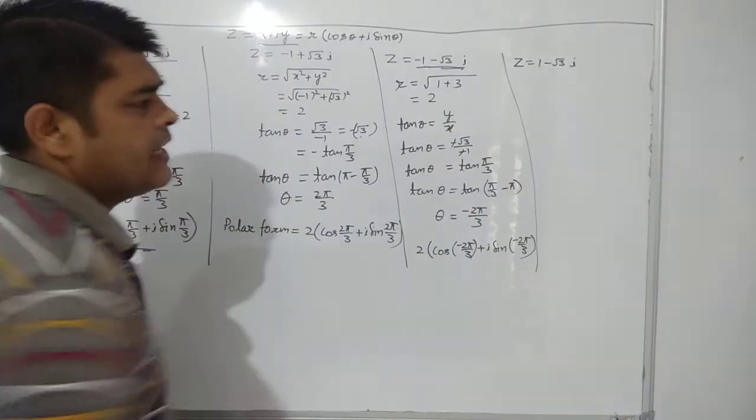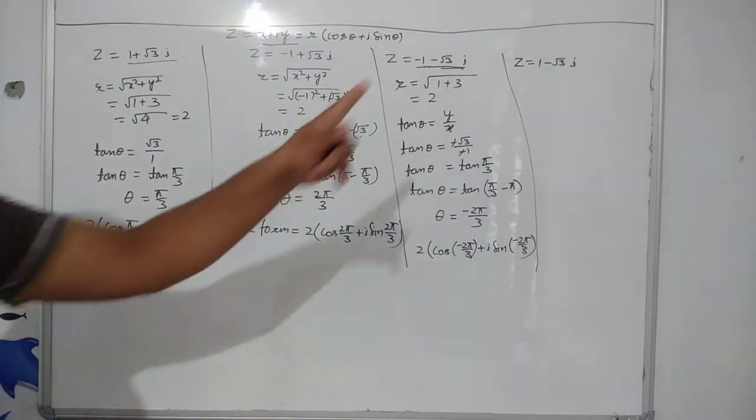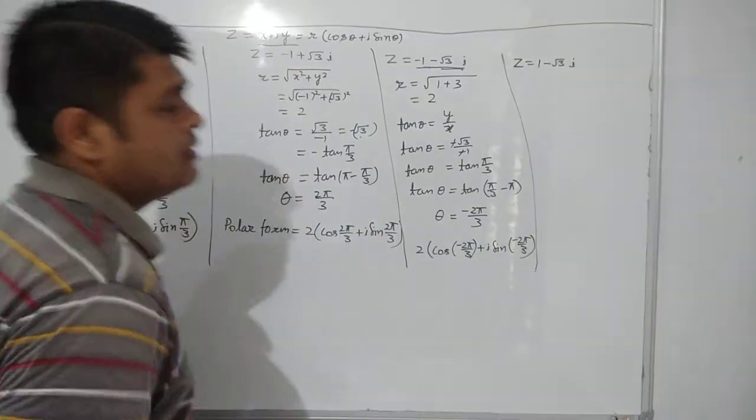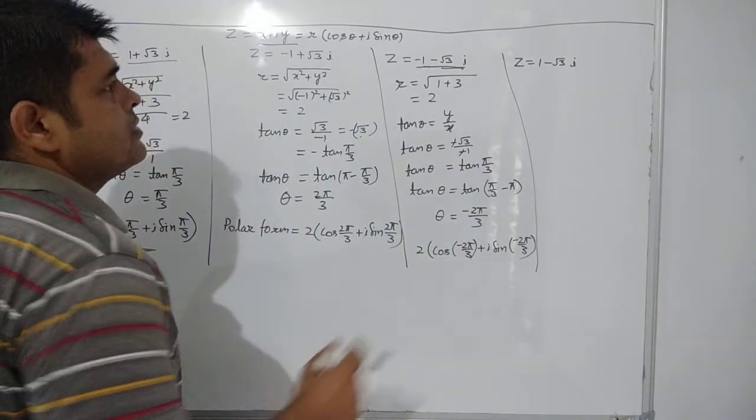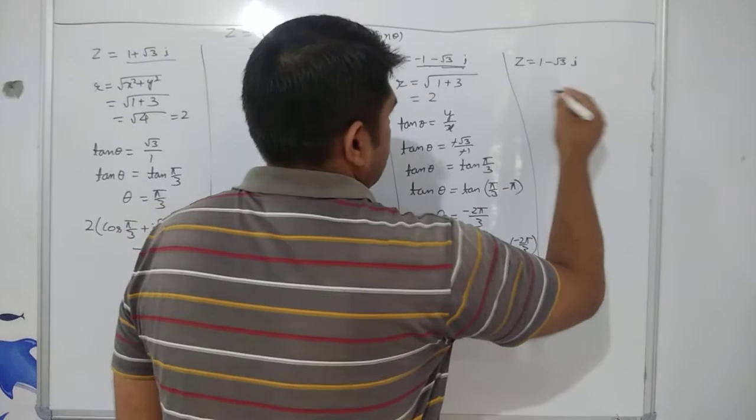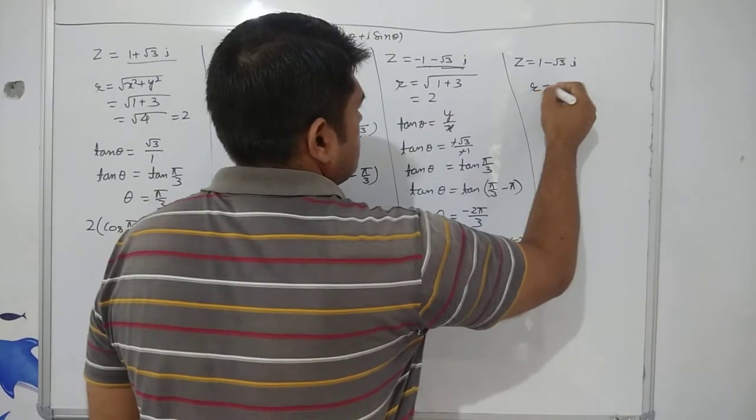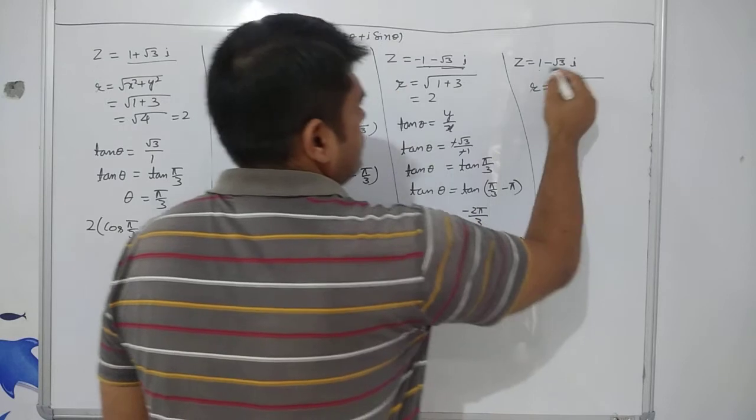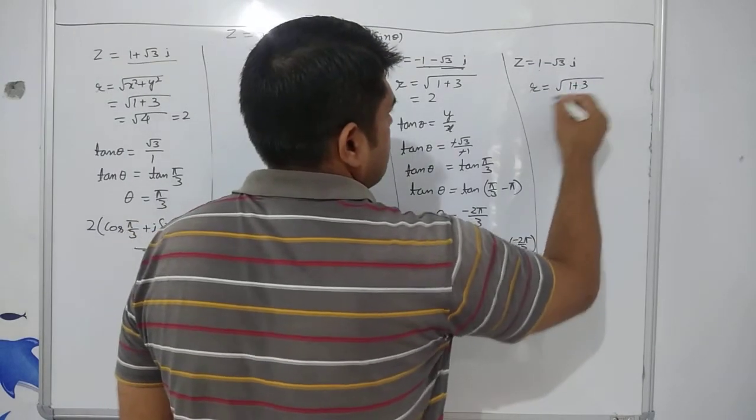Now, come to the next fourth case. It is in fourth quadrant. As you can see, x is positive and y is negative. So, in fourth quadrant, you have to find out again first the modulus, that is value of r. So, substituting the value of x and y, you will get 1 plus 3 again 2.